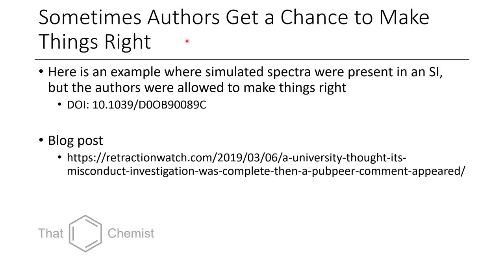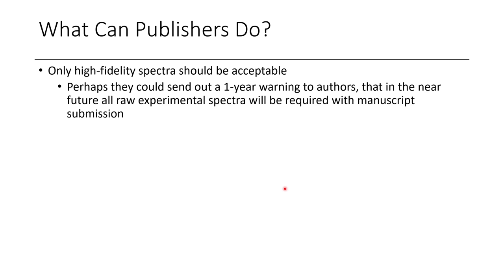Sometimes authors do get a chance to make things right — instead of just a retraction notice, there can be revisions. But if this happens in a journal where the author is also an editor, that's concerning. In the case of Janine Cossey's group, she has been an editor for JOC, and some of the retracted or revised articles involving academic dishonesty appeared in the journal she edits. Even if it's all above board, that looks bad and seems like an abuse of privilege.